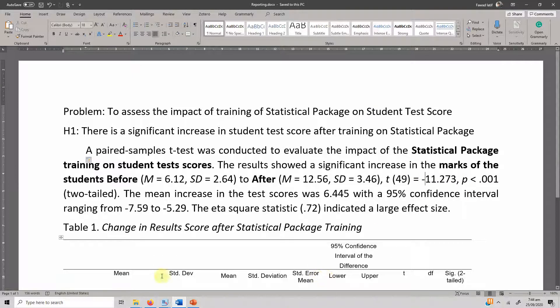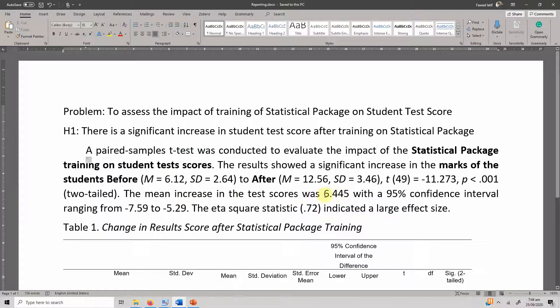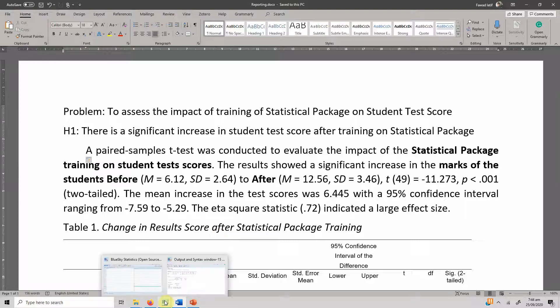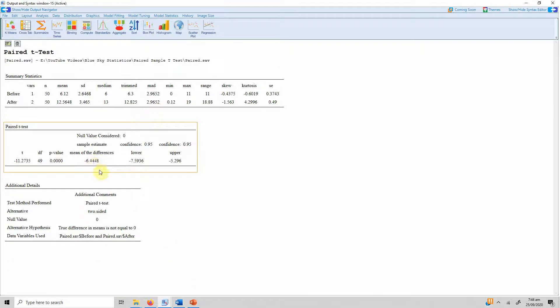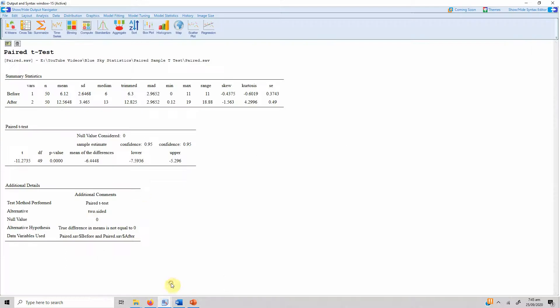P-value is less than 0.001. Here is your p-value, yes it is less than 0.001, so it is even significant at 0.1%. The mean increase in the test score was, so what was the difference, how was the increase? So it's 6.445. The minus here does not mean that the scores decreased. The minus here is just because it is before minus after, so do not get confused by this. With 95% confidence interval ranging from minus 7.59 to 5.29.